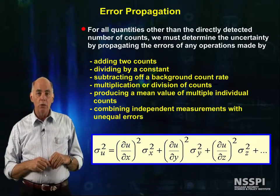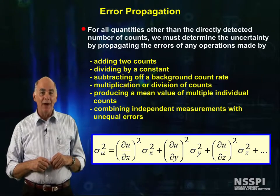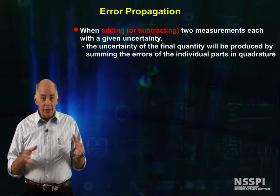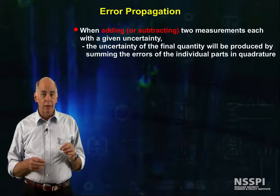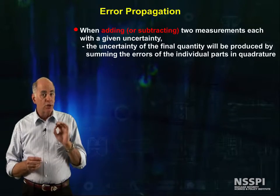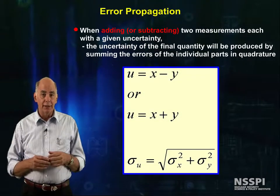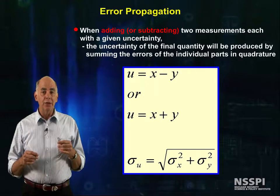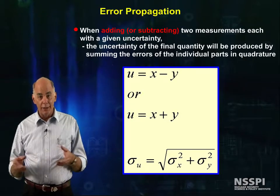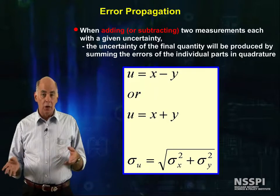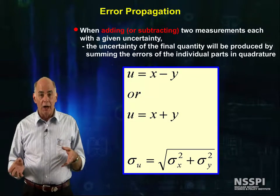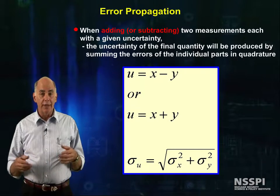For those of you who actually know what the partial derivative symbol means, you can easily derive what I'm going to show you next. When you're adding or subtracting two measurements each with a given uncertainty, the uncertainty of the final quantity is produced by summing the errors of the individual parts squared. If x and y are summed or subtracted to produce u, then the standard deviation of u is the square root of the sum of the standard deviations of x and y, each squared. As a side note, now you can see why statisticians love variance — the variance of u, the sum, equals the sum of the variance of x and the variance of y.